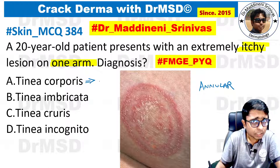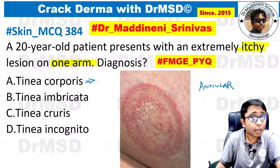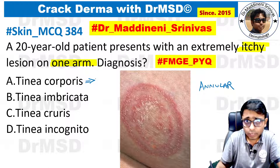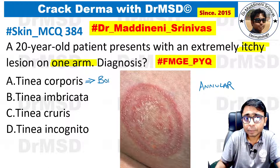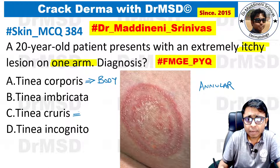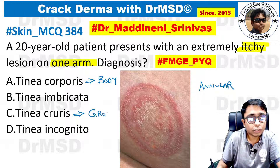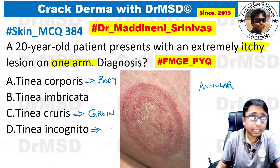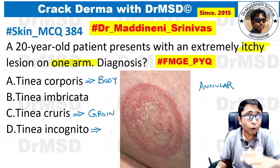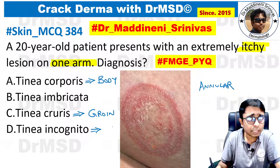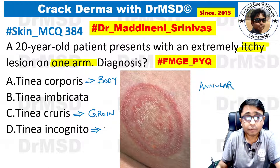Tinea corporis: when the dermatophytic fungal infection happens over the body, it is called tinea corporis. When the same dermatophytic fungal infection happens in the groin, it is called tinea cruris. When tinea is modified because of the usage of topical steroids, we call it tinea incognito.